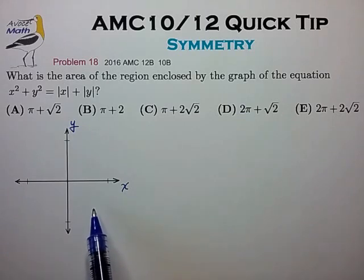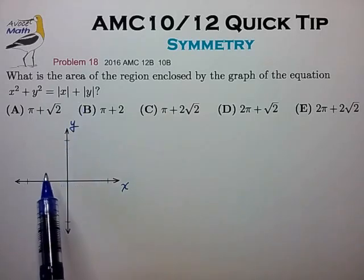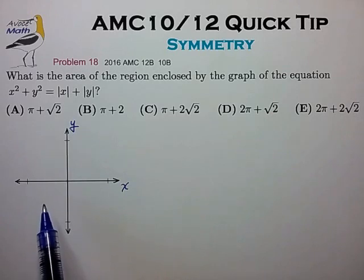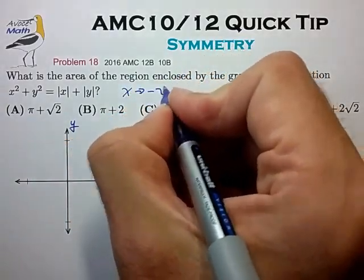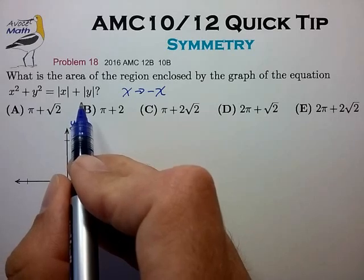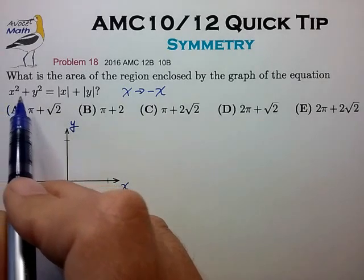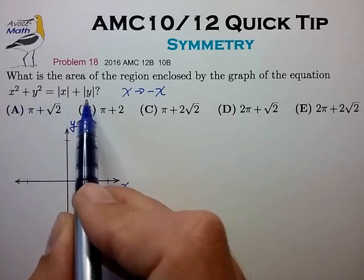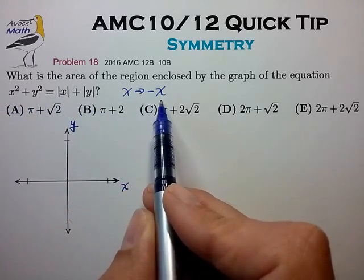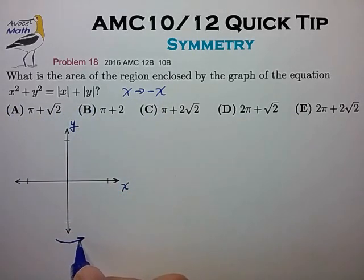So we'll need to look for any available symmetry to help simplify our work. Now reflection symmetry about the axes is probably the easiest to look for so let's do that first. So let's try to substitute x for minus x in our equation and see how that affects the equation. And we notice that when we make the substitution the x squared is unchanged and also the absolute x is unchanged. So essentially the entire equation is unchanged by this variable substitution and what that means is that the graph of this equation is symmetric about the y-axis.